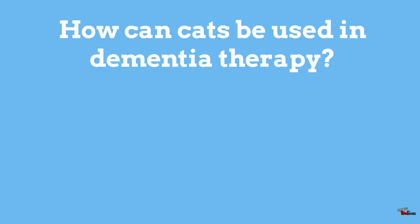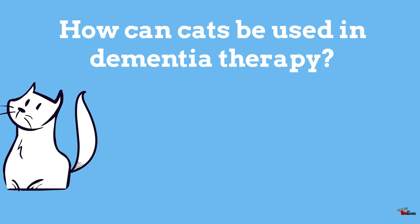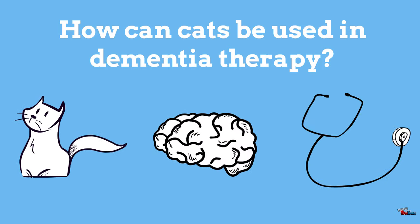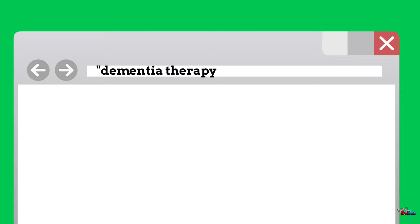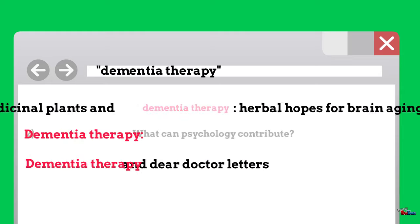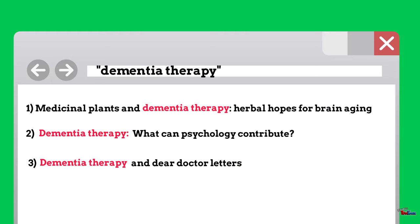Using the same example from part one of this series, where we were looking for information on cats and dementia therapy, putting "dementia therapy" in quotes tells the database to only retrieve articles that contain the exact phrase "dementia therapy".